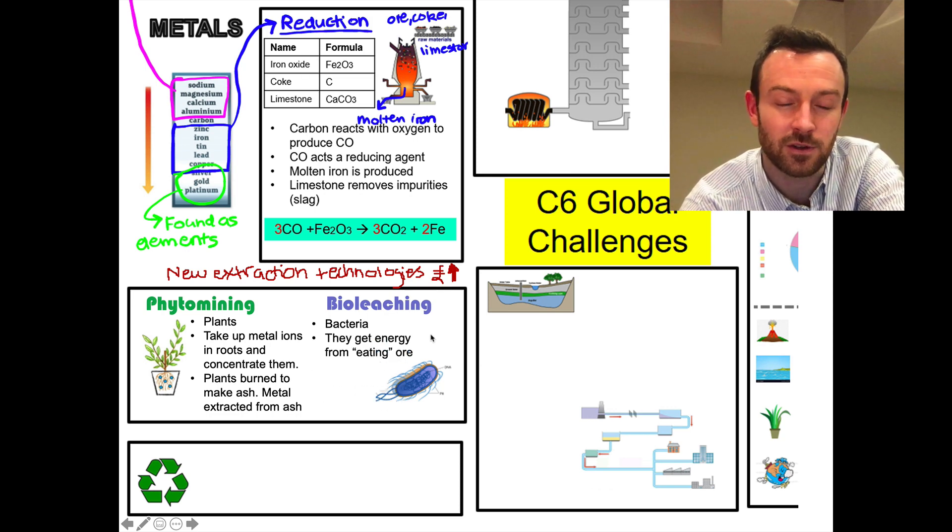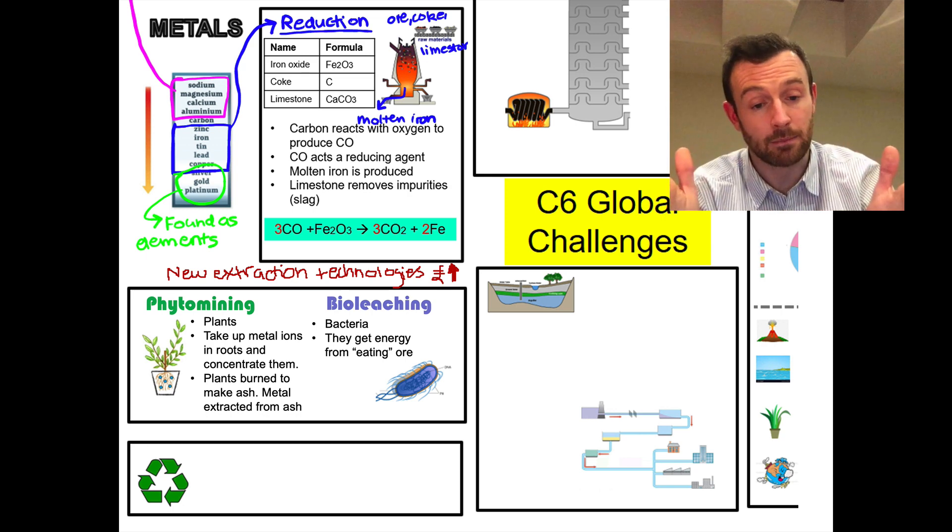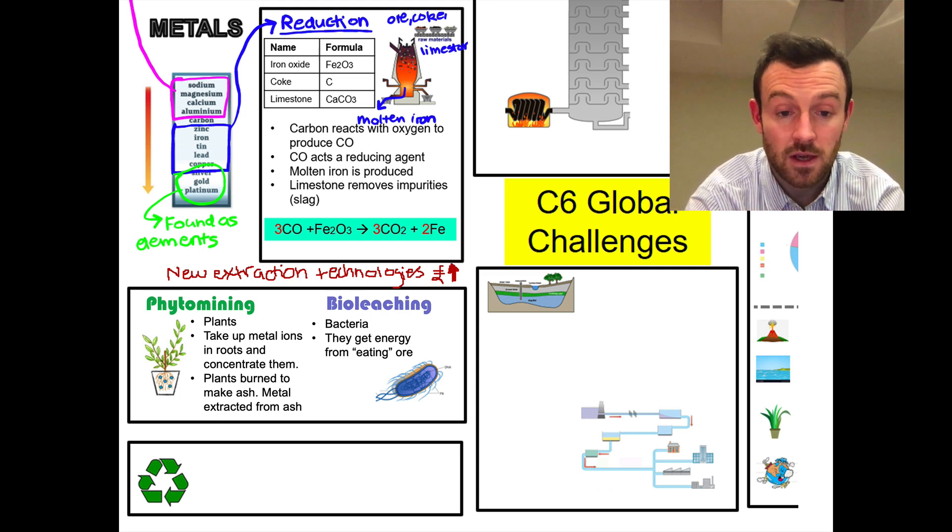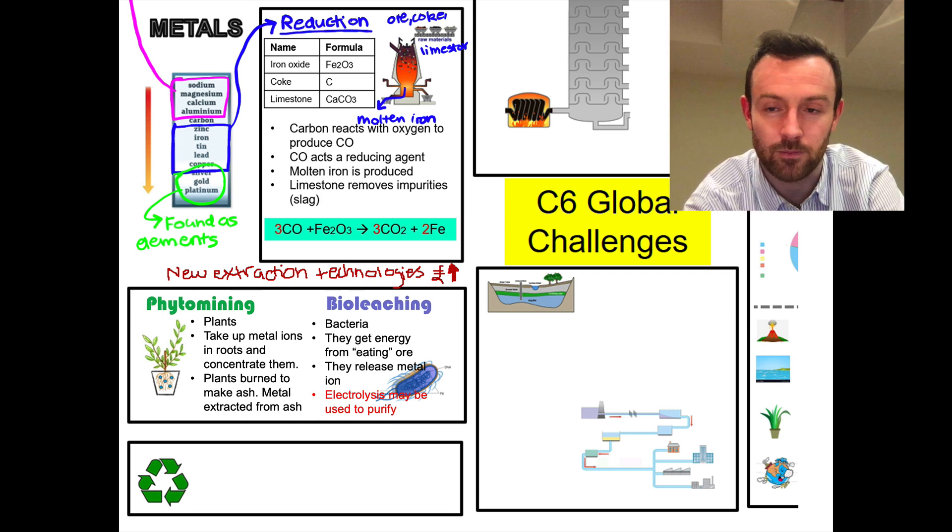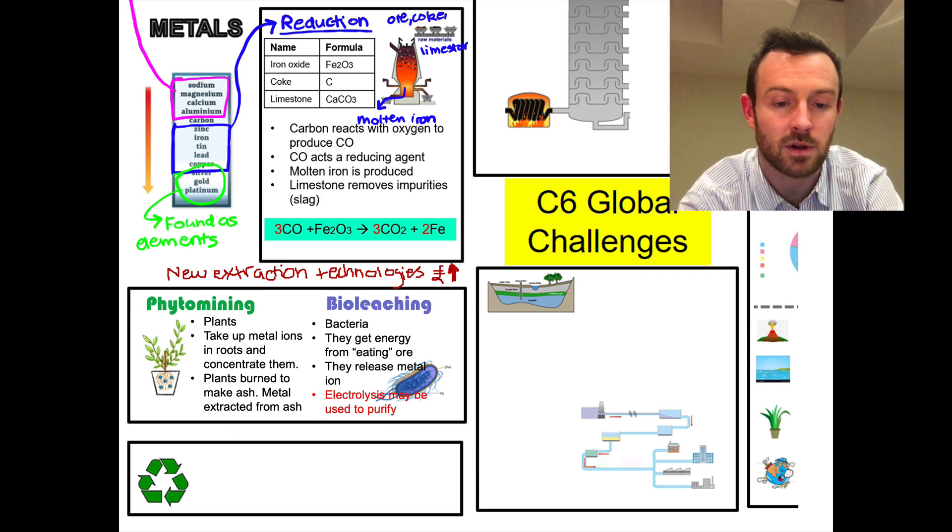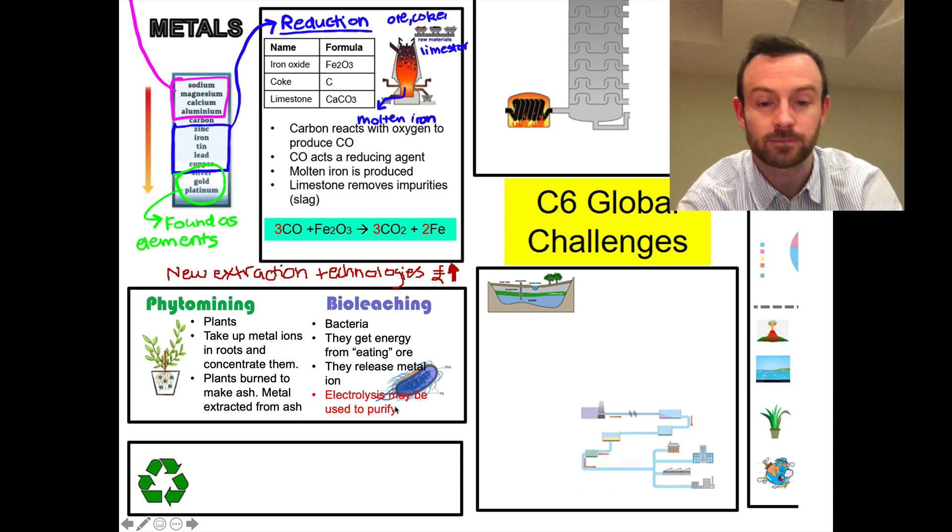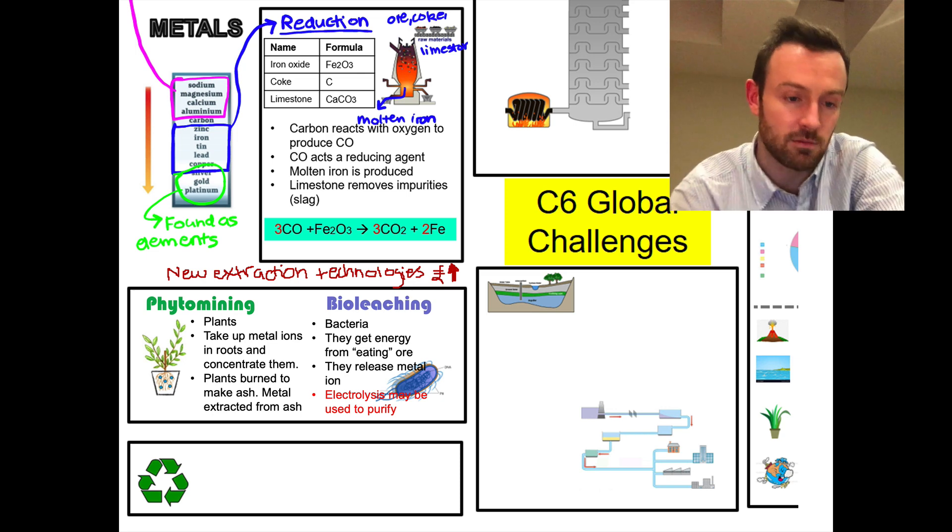And what the bacteria do is they somehow get some energy from eating the ore. They actually break the chemical bonds in the ore, releasing the metal ions. And when they do that, these metal ions can then be passed out into solution. And we can use electrolysis to purify - and I've put that in red there because electrolysis may be used to purify both the ash from phytomining or what's called the leachate, which is the solution produced by bioleaching.